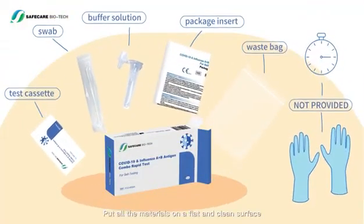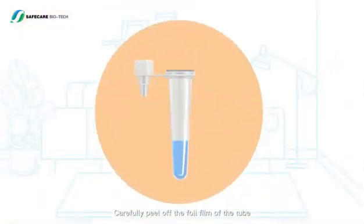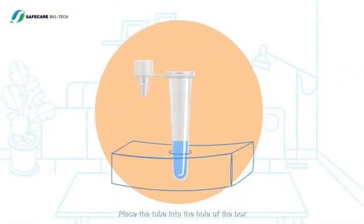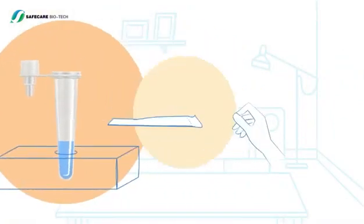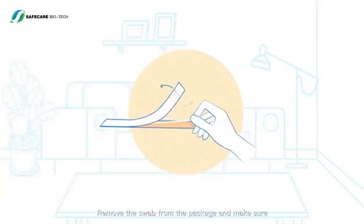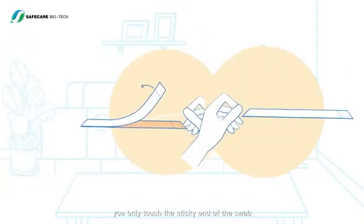Carefully peel off the foil film of the tube. Place the tube into the hole of the box. Remove the swab from the package and make sure you only touch the sticky end of the swab but not the soft tip of the swab.